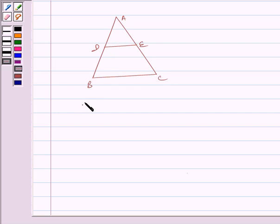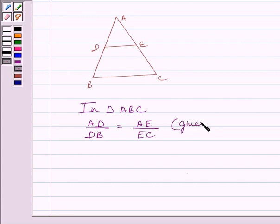That is, if in a triangle we are given AD upon DB is equal to AE upon EC, then by converse of basic proportionality theorem we get DE is parallel to BC.